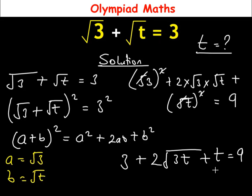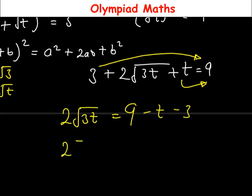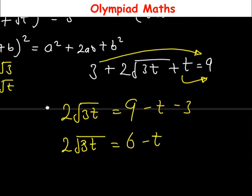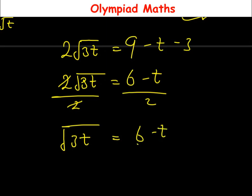At this junction, we are going to move t to one side and also move 3 to the other side of the equation, such that we have 2√(3t) left, which equals 9 minus 3 minus t. So 2√(3t) = 6 minus t. Then we divide both sides by 2, giving us √(3t) = (6 − t) / 2.